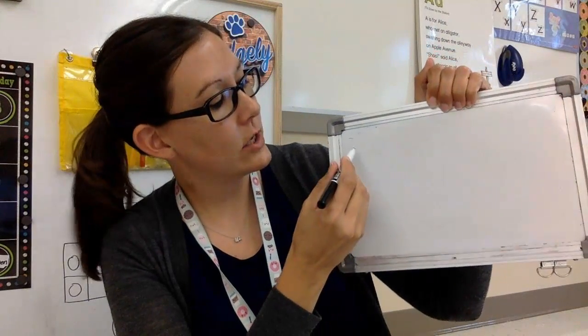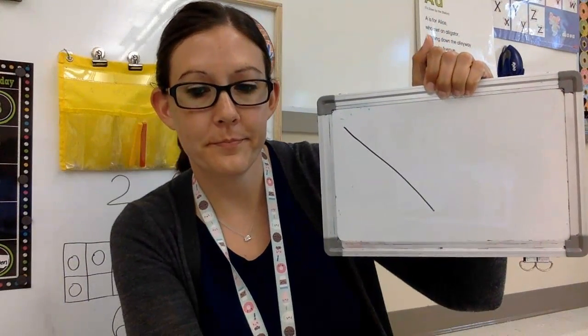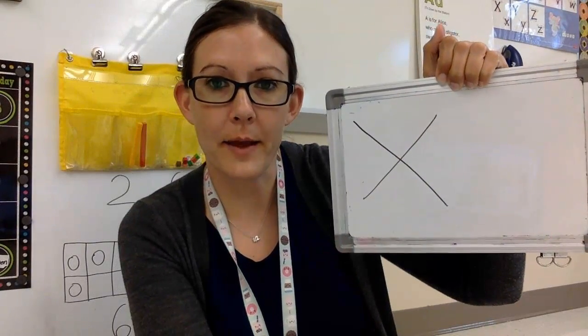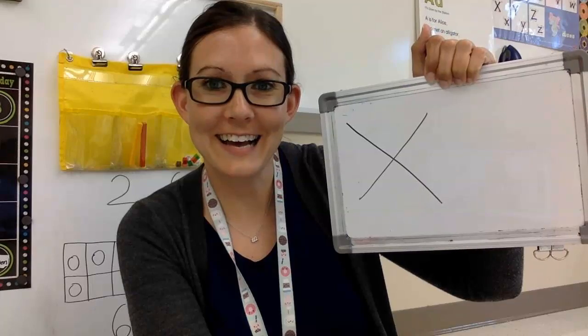All right. Let's try to write one. X starts up at the top and it's a slanted line down. Probably not so wide. And then we come to this side and it's a slanted line that way. Pretty easy, huh?